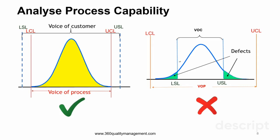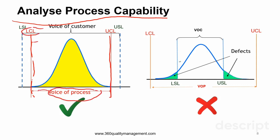This is the illustration of the concept for process capability. In this diagram we have the voice of the process in red, which is the lower control limit and upper control limit, and we have the voice of the customer, which is represented by the lower spec limit LSL and upper spec limit USL. As you can see, if the voice of the process variation is smaller than the total specs tolerance, then we consider this a good process.